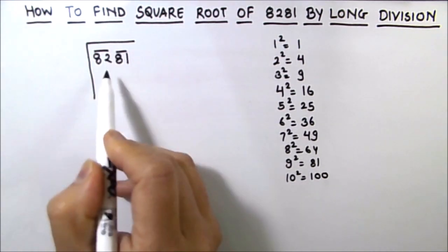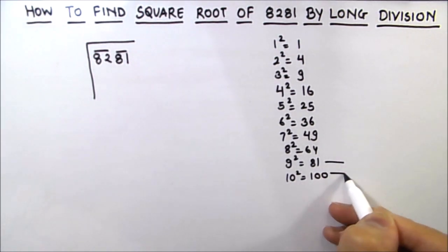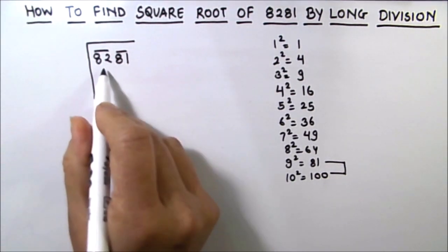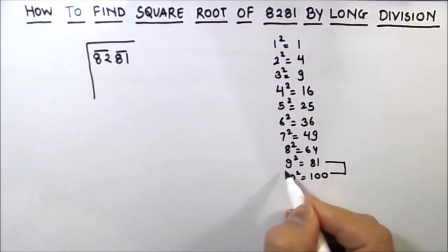So our number is 82, which lies between these two square numbers 9 and 10, but 10² is greater than 82. So we are going to use 9 as our square number.